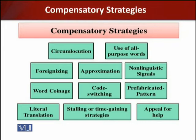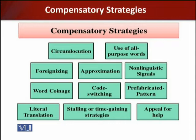Number one is circumlocution, which means describing or exemplifying the target object or action. For example, 'the thing you open bottles with' for corkscrew. You use a phrase that moves around an idea with multiple words when perhaps fewer words could describe it — your phrase runs in a circle. If you do not have the specific word, you use circumlocution as a compensatory strategy.